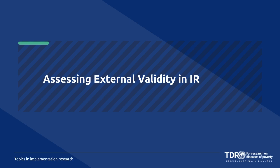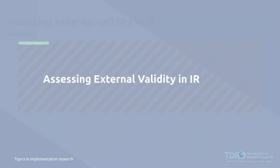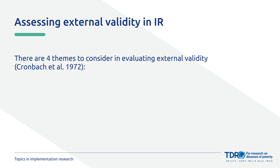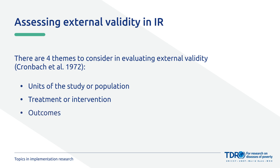Knowledge of these different factors makes it possible to develop an evaluation grid for assessing external validity in an implementation research project. Let's consider a broad approach for assessing external validity. We pose some guiding questions that researchers, practitioners, and decision-makers can apply when assessing the external validity of findings from an implementation research study, intervention, or strategy. There are four themes to consider: 1. Units of the study or population, 2. Treatment or intervention, 3. Outcomes, and 4. Settings or environment. These four themes are applicable to all kinds of implementation research study design.